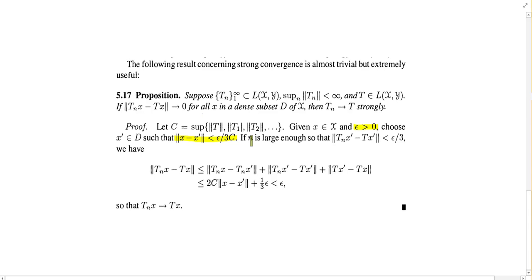Where did they come up with that? And then in the next line, we're going to choose n large enough so that the difference of two other things is less than epsilon over 3. Where did that come from?